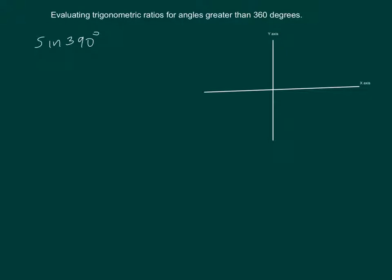Now clearly 390 degrees means the angle has completed one full rotation and then it's going to end up in the first quadrant. In order to calculate the value, we are now interested in finding the reference angle with the x-axis.